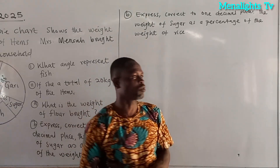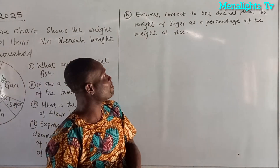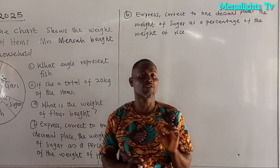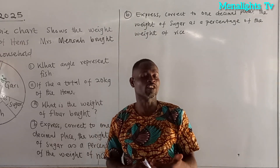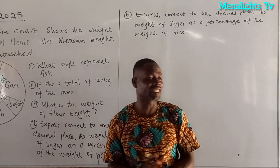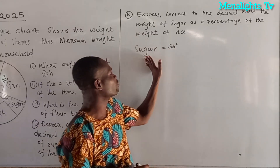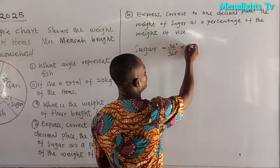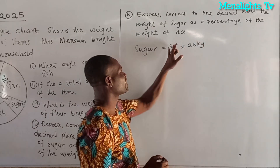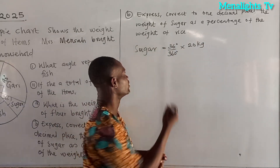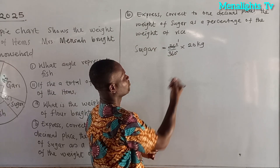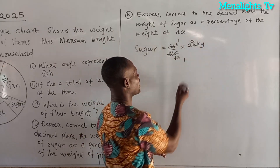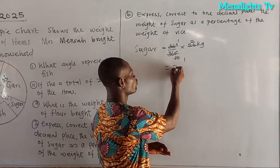We come to part IIB: express correct to one decimal place the weight of sugar as a percentage of the weight of rice. We first find the weight of sugar. The angle sector of sugar is 36 degrees, so the weight of sugar is 36 over 360 times 20 kg. 36 goes into 360 ten times, and 10 goes into 20 twice — so the weight of sugar is 2 kg.